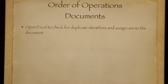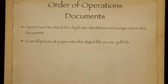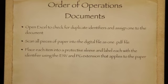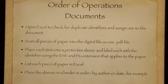Here is your order of operations for documents: Open Excel, check for duplicates, and assign a number. Scan all pieces of paper into one PDF file. Place each item in a protective sleeve and label the sleeve by the appropriate extension. List each piece of paper in Excel, and place the sleeves in a binder, in order, by author or date, for example.